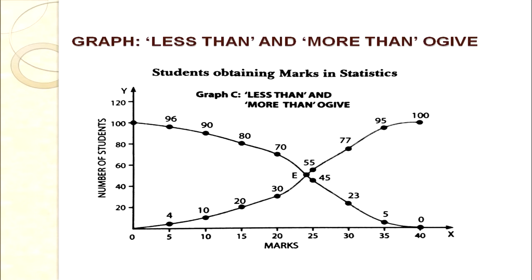For the more than cumulative curve: starting from 100, the points 100, 96, 90, 80, 70, 45, 23, 5, 0 are plotted against marks 0, 5, 10, 15, 20, 25, 30, 35, 40 and joined with a smooth freehand curve. Both the less than and more than cumulative frequency curves can be drawn on the same diagram.